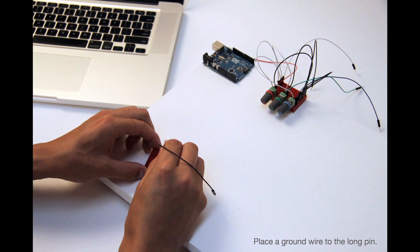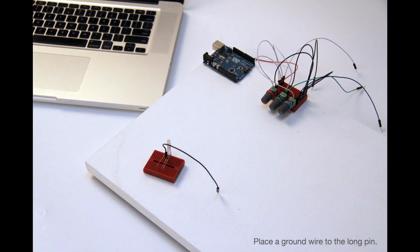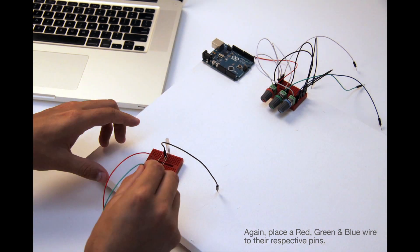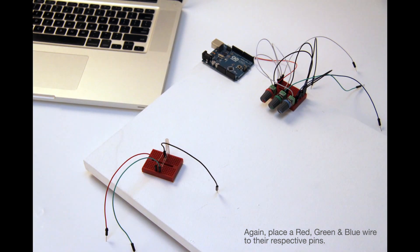Now get a ground cable and put it in the ground pin. Place an RGB wire on each of the RGB pins.